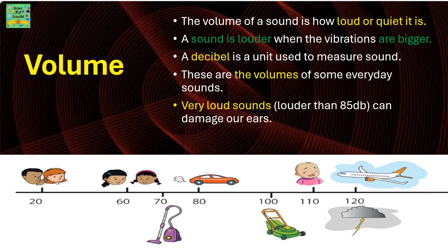The volume of a sound is how loud or quiet it is. A sound is louder when the vibrations are bigger. A decibel is a unit used to measure sound. These are the volumes of some everyday sounds. Very loud sounds — louder than 85 decibels — can damage our ears.